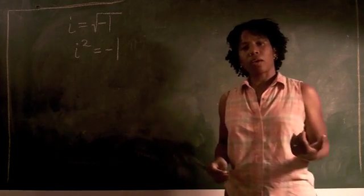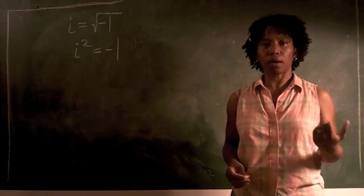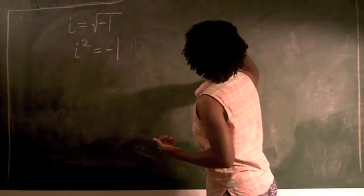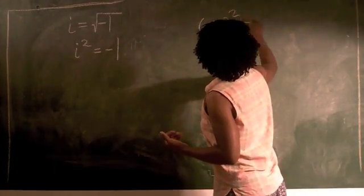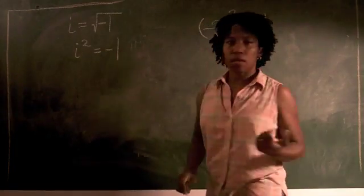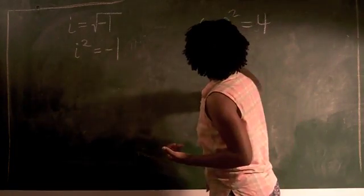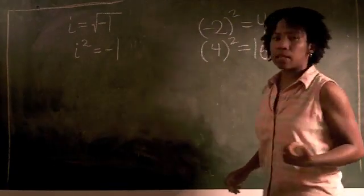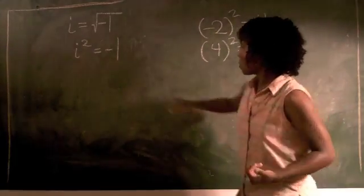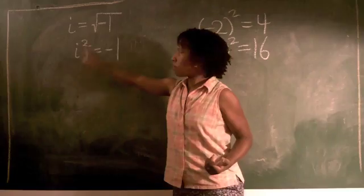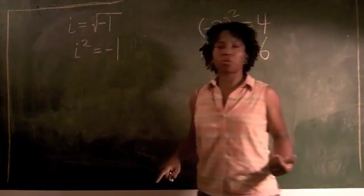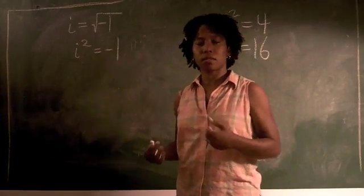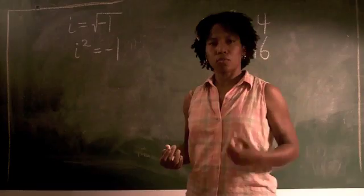When you square real numbers, you always get a positive answer. If I square a negative number, like negative two squared, I get positive four. And if I square a positive number, like four, I get positive 16. So in order to square something and get a negative number, it has to be very unusual indeed. And in fact, that's what we call i. It's the number that's designed to be squared to make it negative.